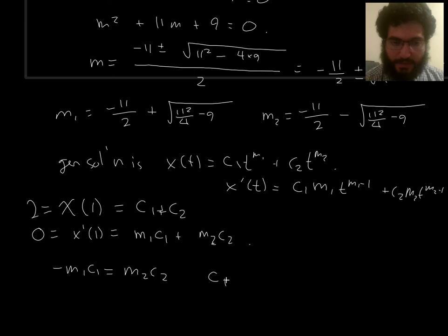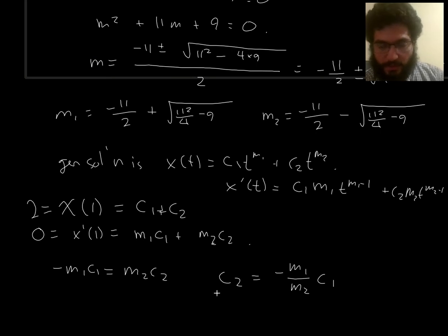So the second equation tells me this. So that gives me, let's say, c2 in terms of c1. c2 is negative c1 times negative m1 over m2 times c1. Okay, m2 is definitely not 0. And c1 is 2 minus c2, according to the first equation.